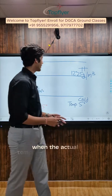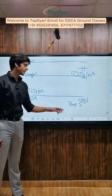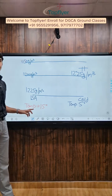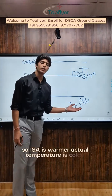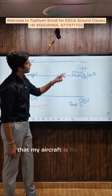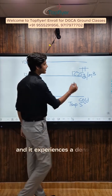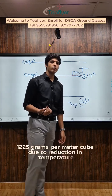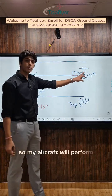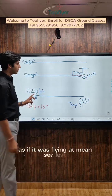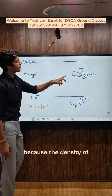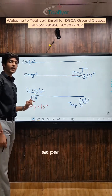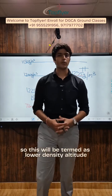Now let's consider when the actual temperature is colder than ISA. The actual temperature today is 5 degrees and as per ISA it should be 15, so ISA is warmer and the actual temperature is colder. Suppose the aircraft is flying at an altitude of 1000 feet and it experiences a density of 1250 grams per meter cube due to the reduction in temperature. The aircraft will perform as if it was flying at mean sea level, because that density of 1250 grams per meter cube is found at mean sea level as per ISA. This is termed as lower density altitude.